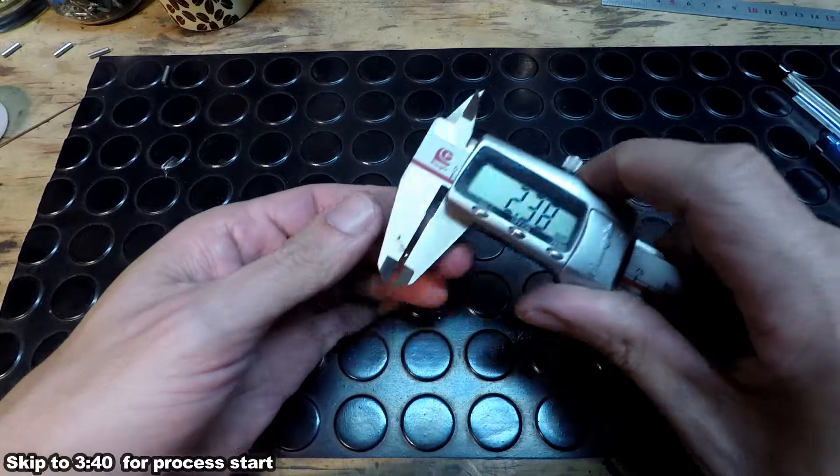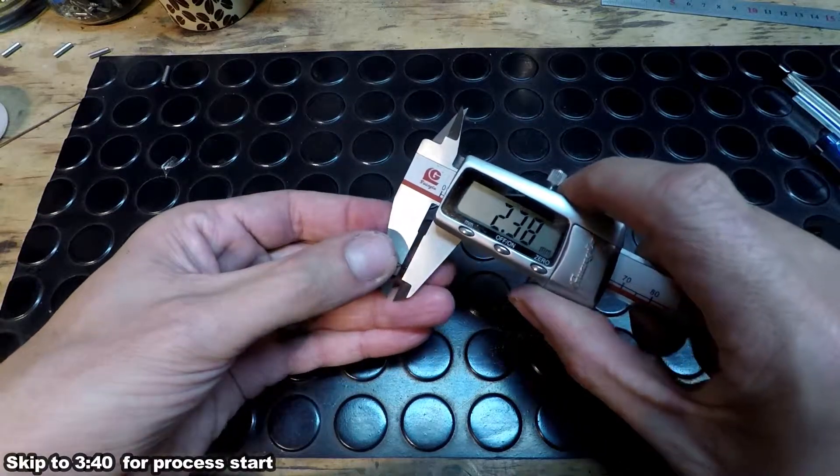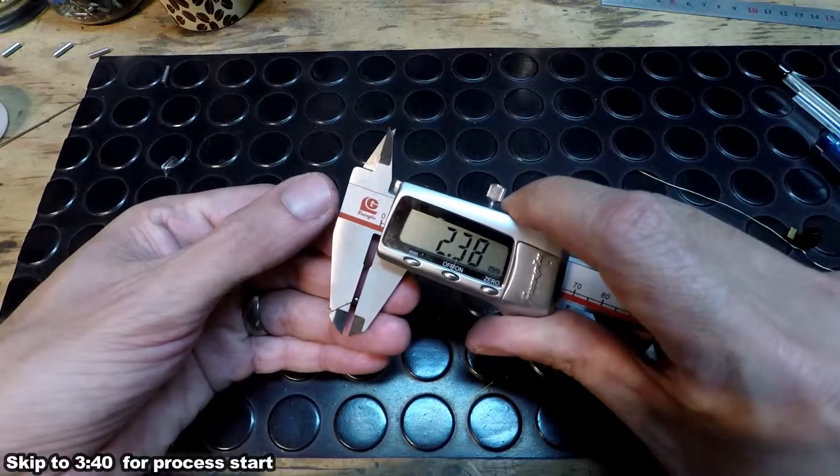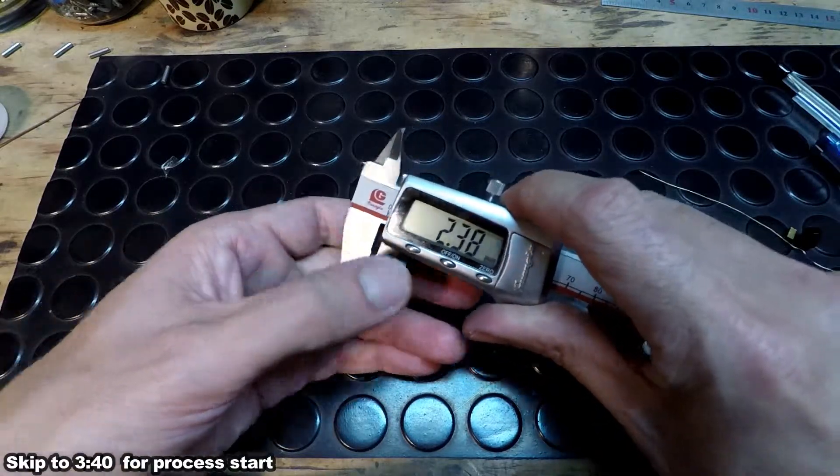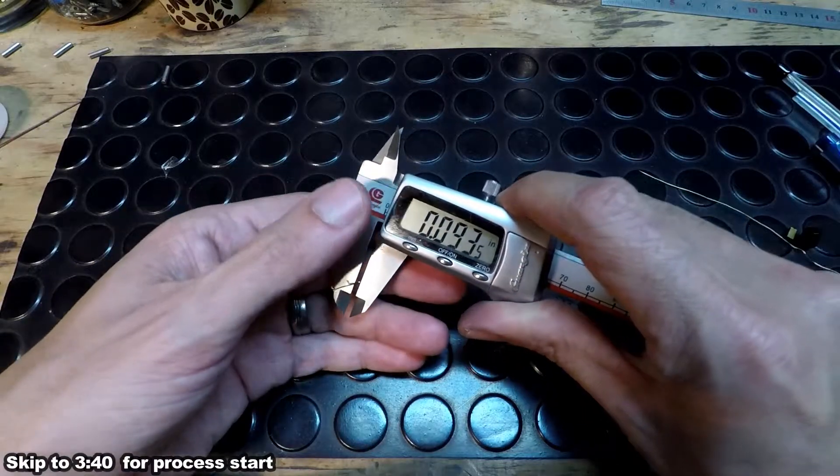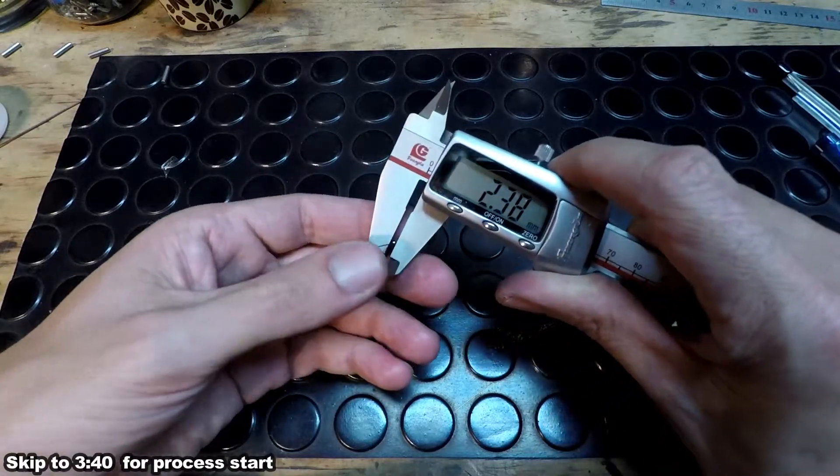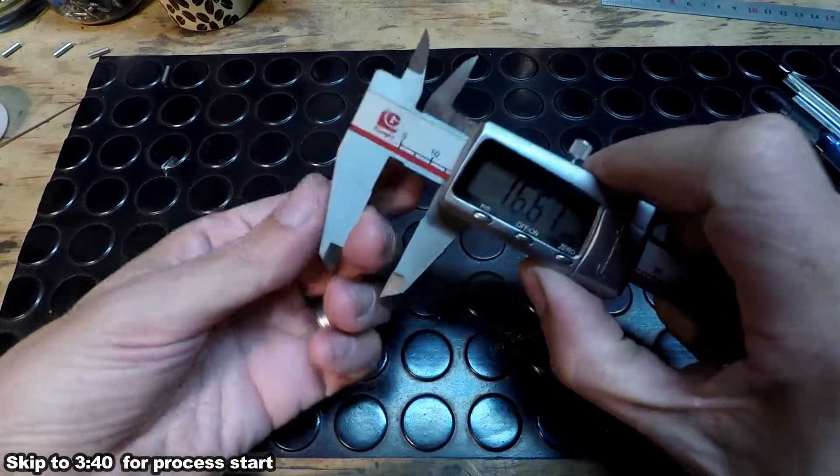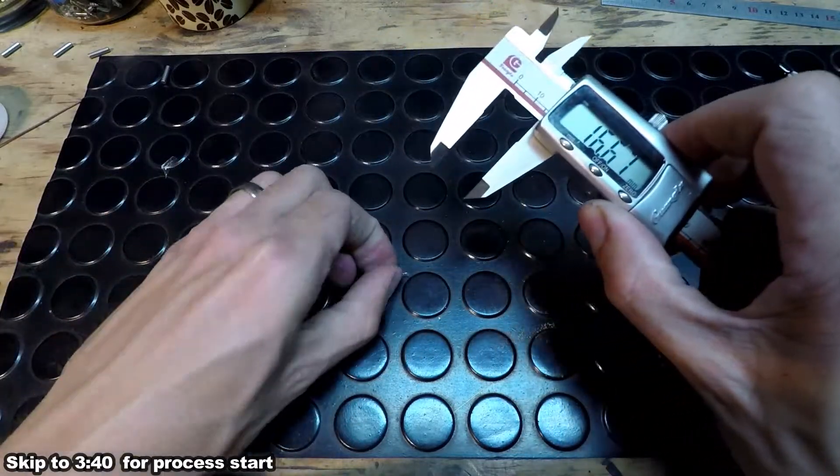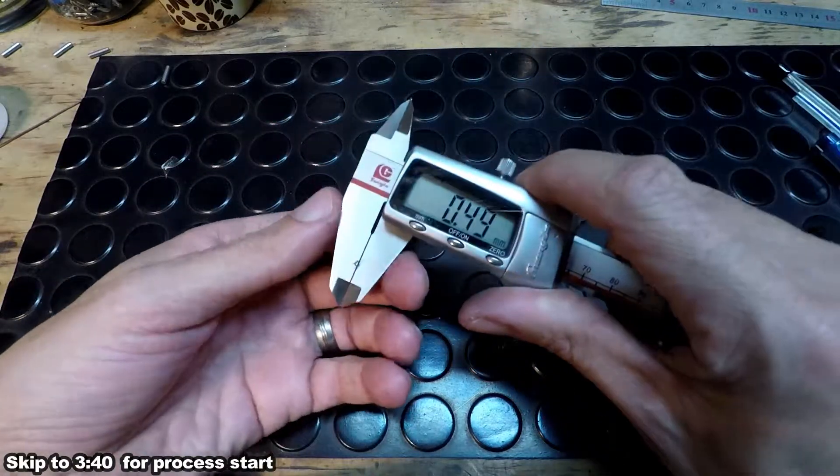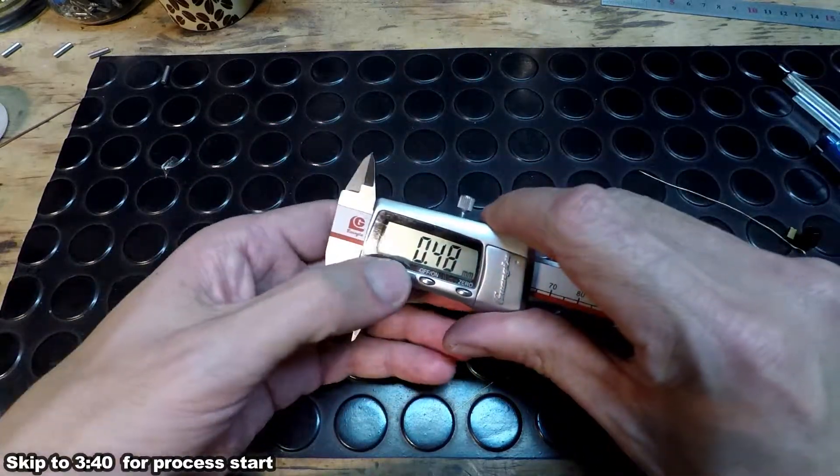Just to measure the little ball bearing, it is about 2.38 mm. Just change it to inches. 1.38 mm and the rod, little electrode, 1.5 mm.